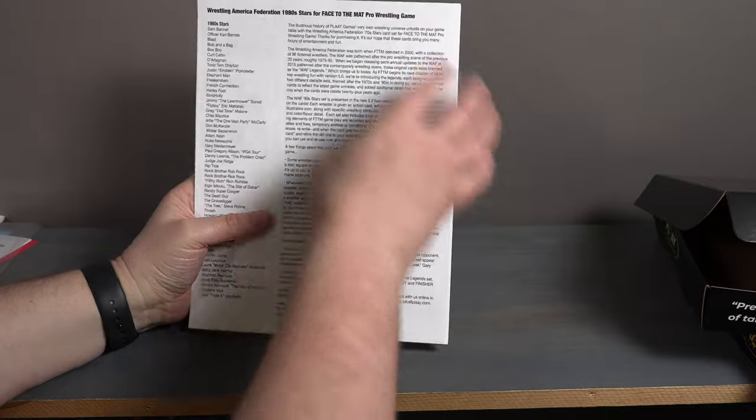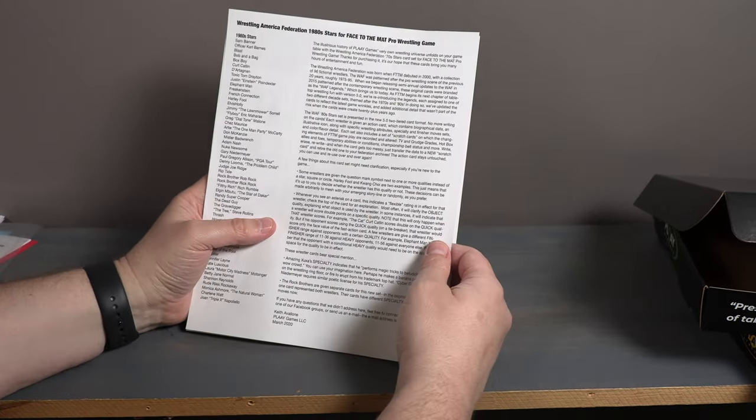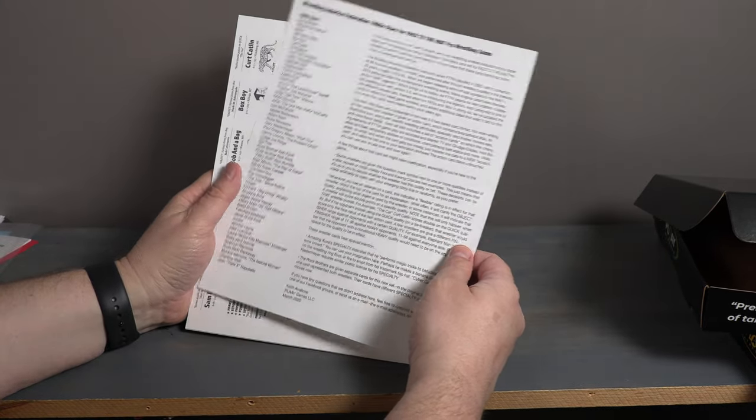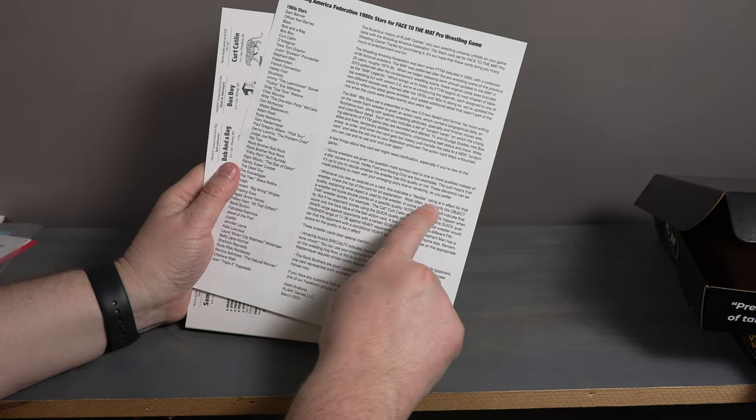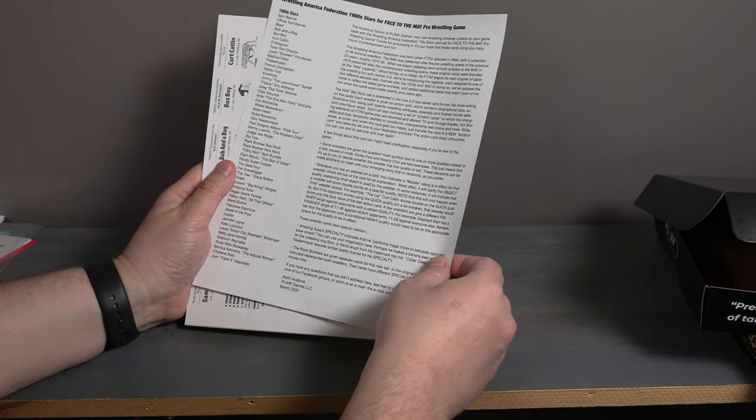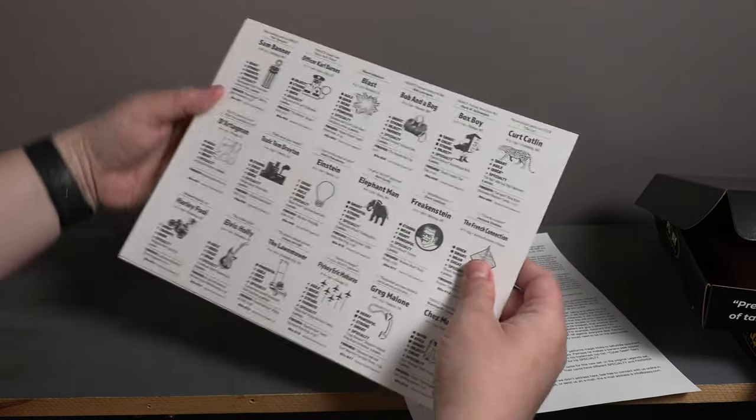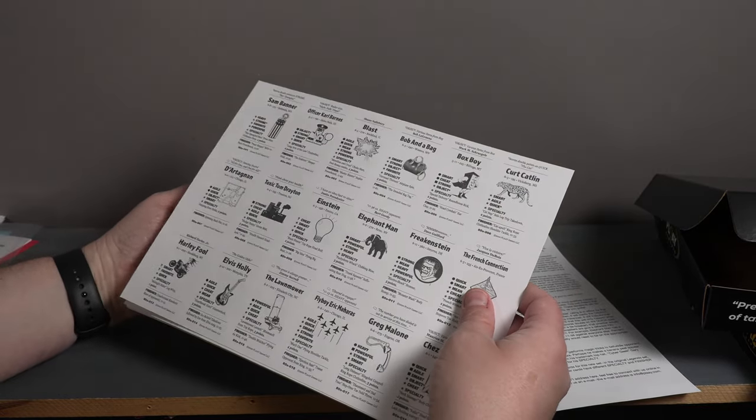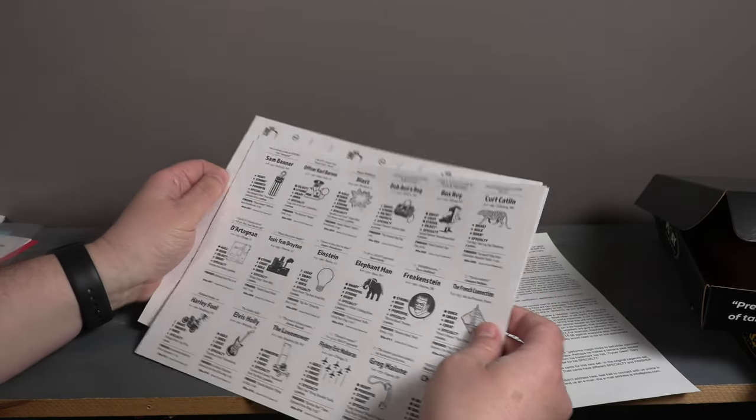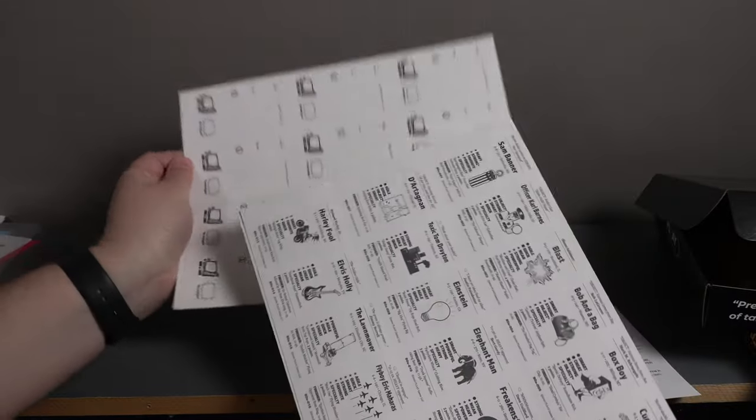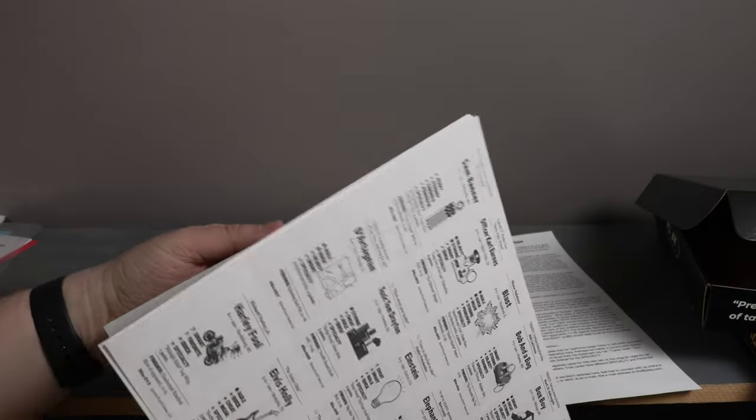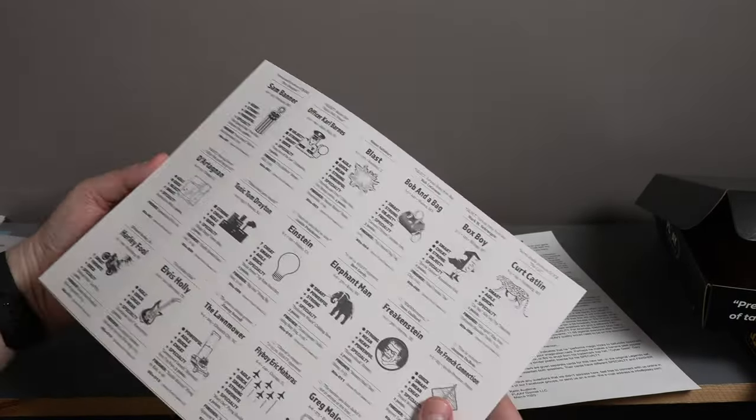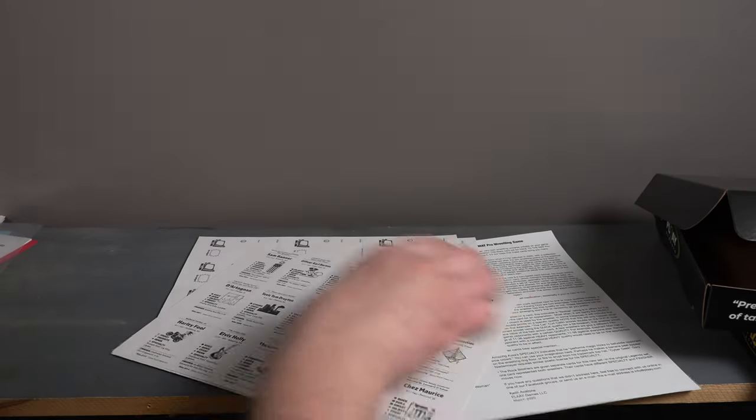So here's some information about the cards. Talks about like whenever you see an asterisk on this card, that's a flexible rating, etc., stuff like that. And there you go, there's the card. It's printed on nice card stock here. And then they also come with some scratch cards there too. So you have some scratch cards and the cards I will say that...